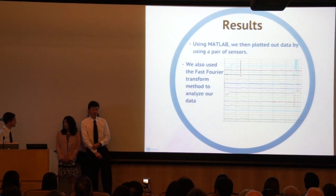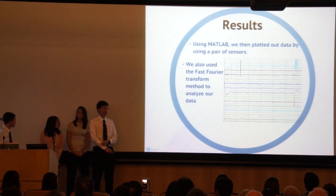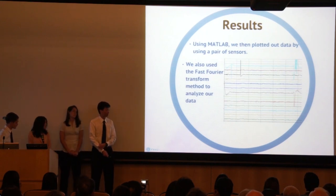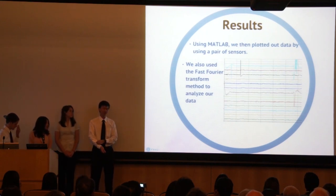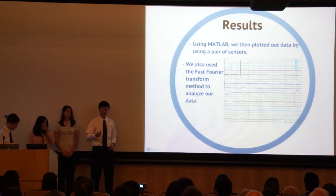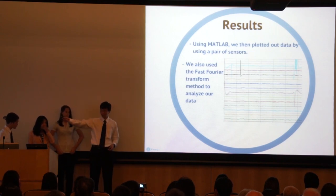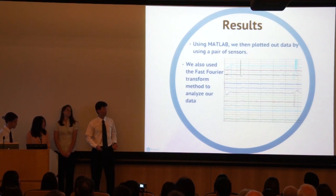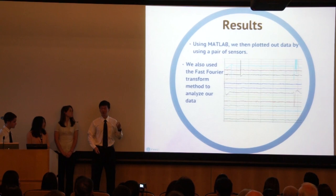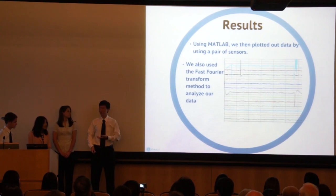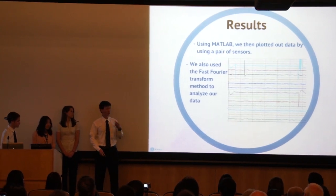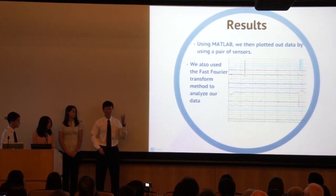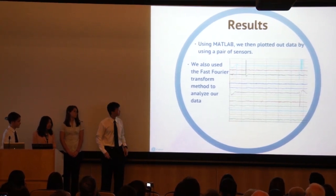In order to acquire our data, we used something called the Emotive test bench, which allowed us to access the raw data from each of the 14 electrodes. This data came in the form of voltmeters, reported every one centisecond. We also used the fast Fourier transform to analyze our data.